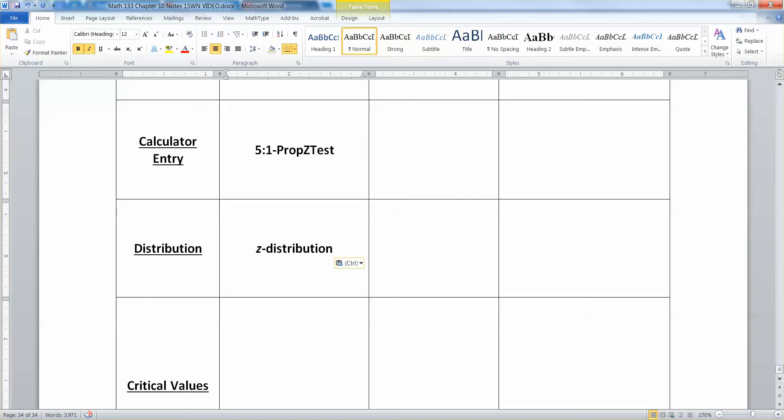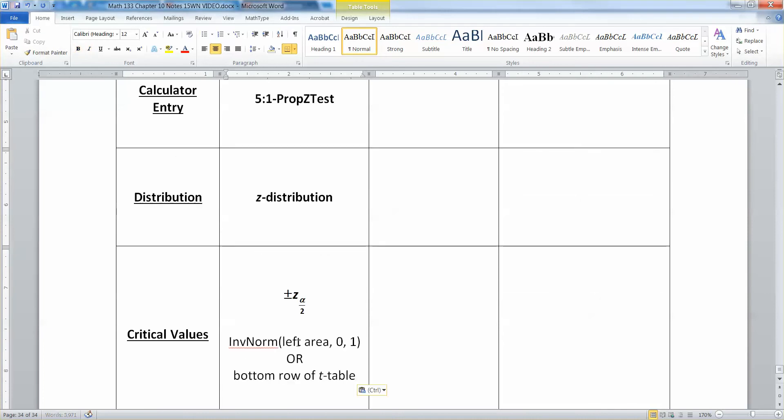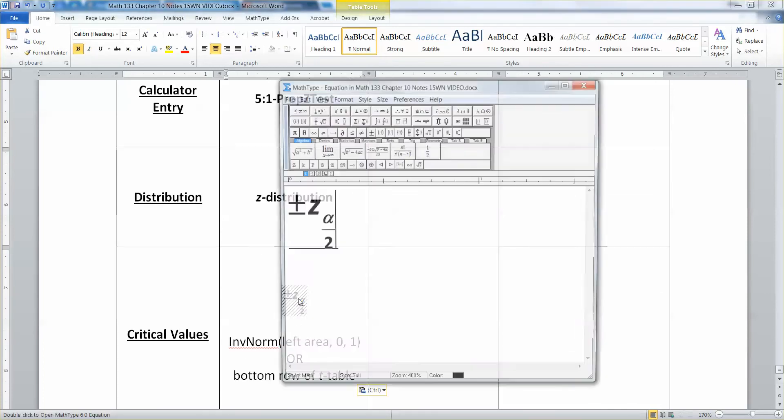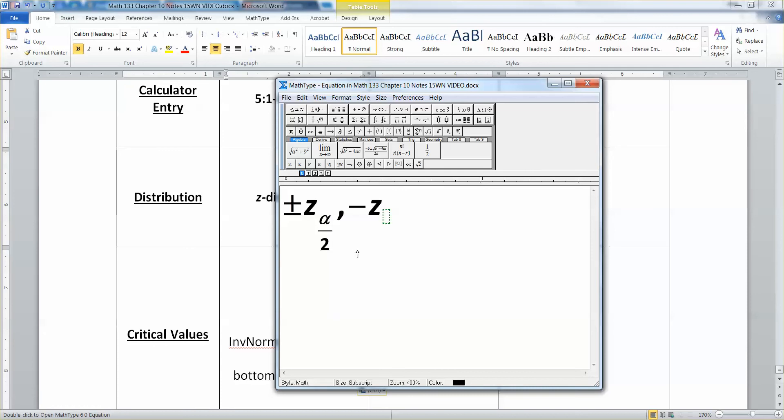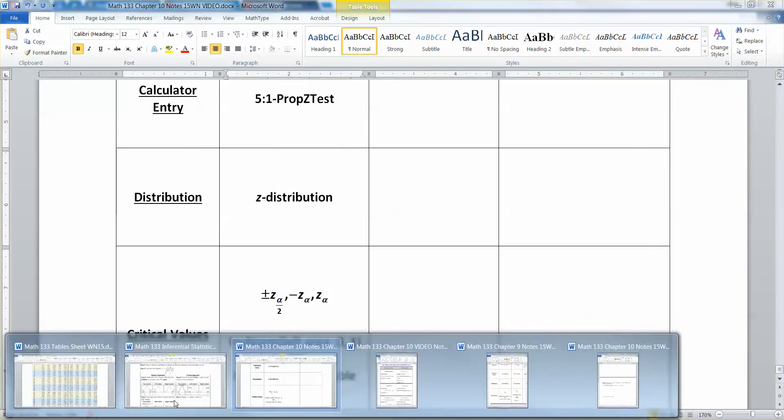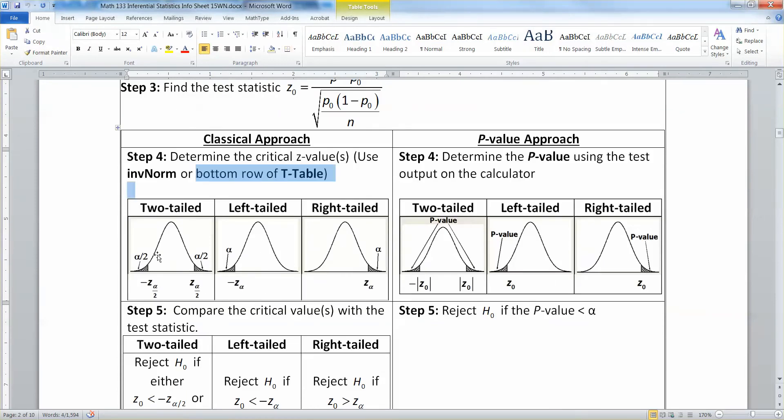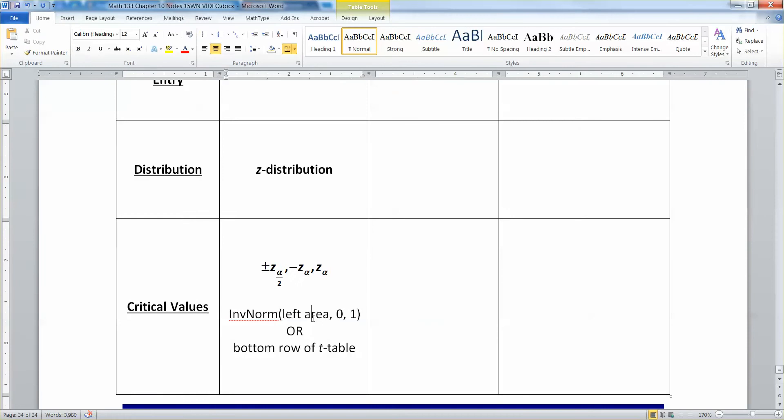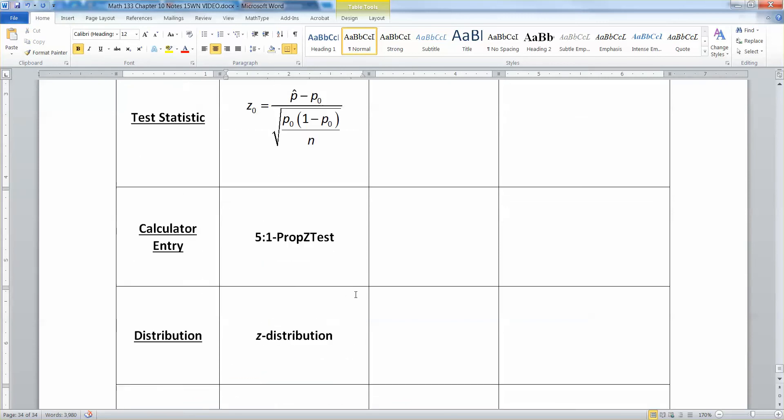But it's also showing up here in the critical values if you're using the classical method. Those are z's, so that's the z distribution. Now, you find those values, the critical values, either with inverse norm or the bottom row of the t-table. Now, if it's a two-tailed test, it's plus or minus alpha over two. If it's a left-tailed test, it's negative z alpha. And if it's a right-tailed test, then it's z alpha. That's what it tells us right in that middle portion right here.